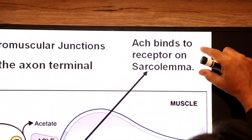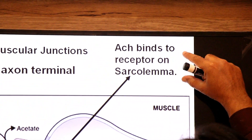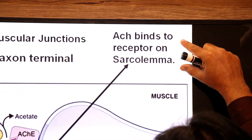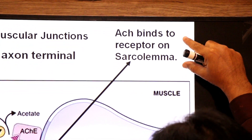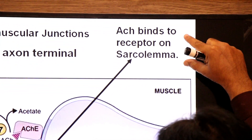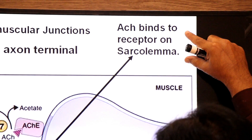Step 4: acetylcholine binds to the receptor protein on the sarcolemma — the plasma membrane of the muscle cell.